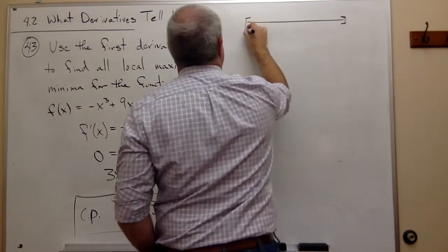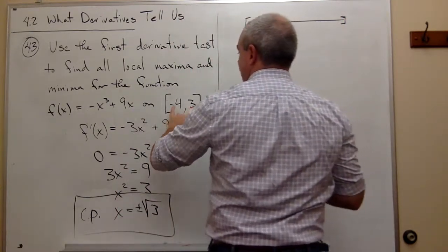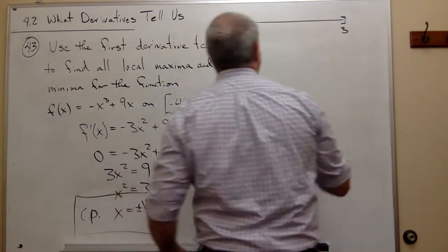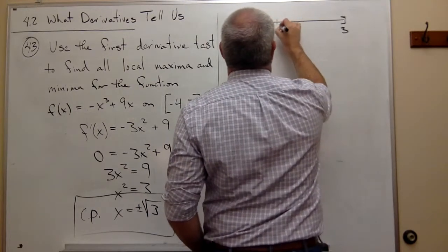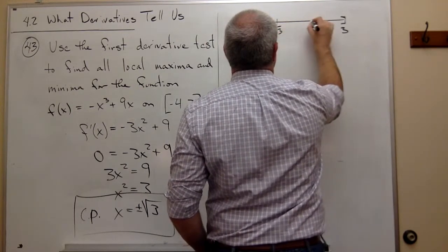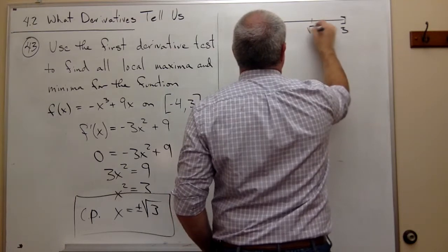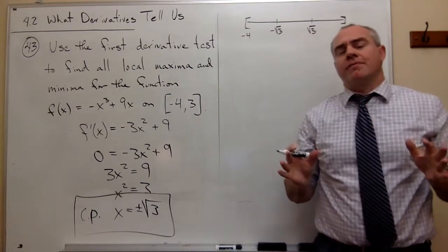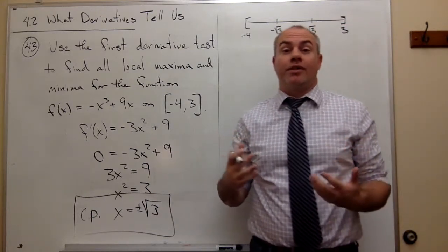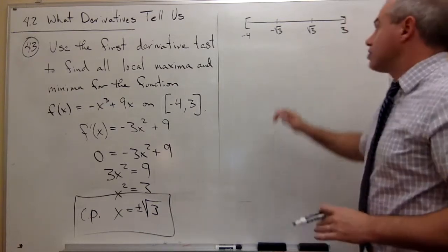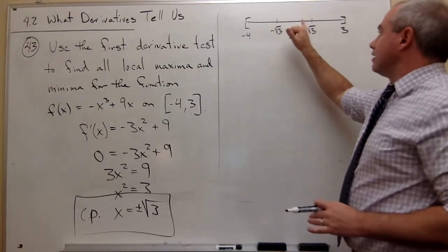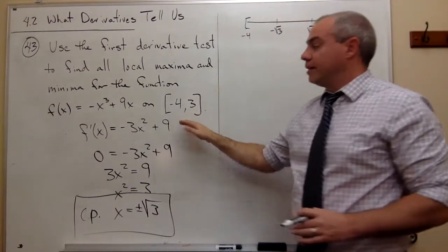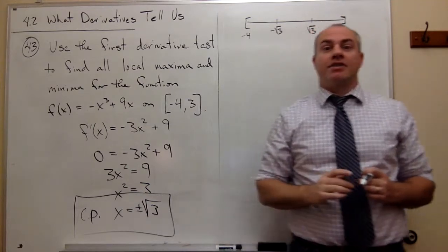Remember, I'm not necessarily interested in everything here, just in between -4 and 3. So here's -4, here's 3, and the guys that I'm really interested in are -√3 and √3. Now, I know this isn't necessarily to scale, but it doesn't really matter because I'm just trying to figure out where things are positive and negative. I need to test something in this interval, this interval, and this interval into my first derivative.